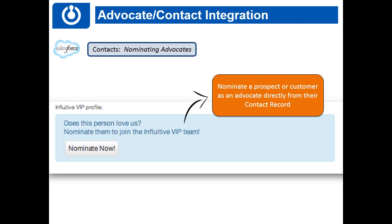The last part of the advocate and contact integration is the ability to nominate someone from Salesforce. If someone is already an advocate in Salesforce, you won't see the nominate button — instead you'll see a snapshot of their Influitive VIP profile, which is a custom object that lives on the contact record within Salesforce. It shows their name, profile picture, badges, and how many points they have.